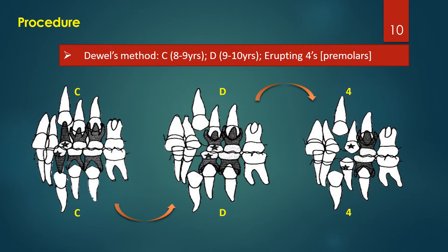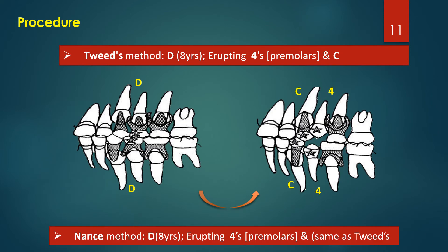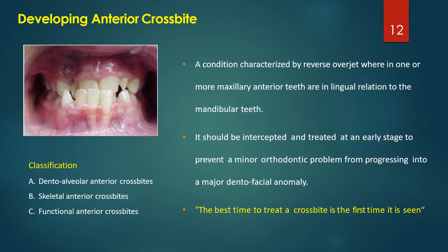There are basically three methods. The first is Dewel's method: C is extracted, followed by extraction of D, then extraction of the erupting first premolar. Tweed's method involves extracting D and then the erupting premolars, followed by C. These are the main procedural approaches to serial extraction.